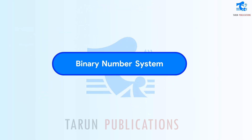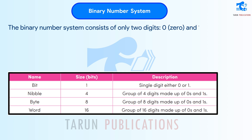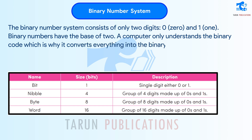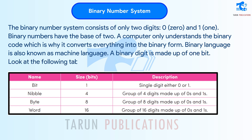Binary number system. The binary number system consists of only two digits, 0 and 1. Binary numbers have the base of 2. A computer only understands the binary code, which is why it converts everything into binary form. Binary language is also known as machine language. A binary digit is made up of one bit. Look at the following table to understand more about binary digits.